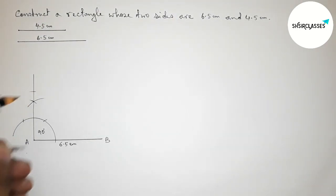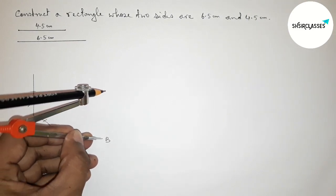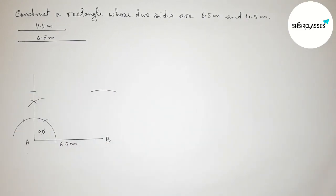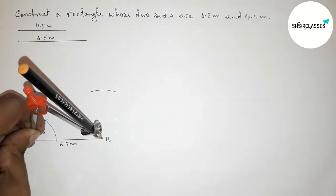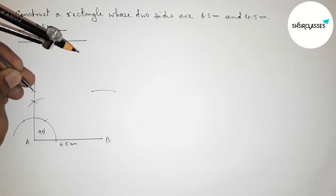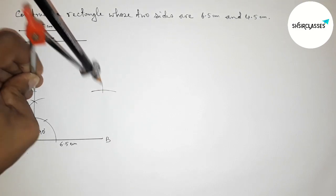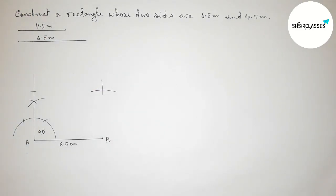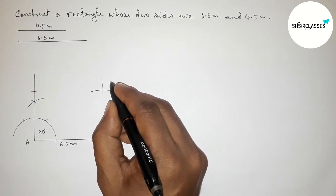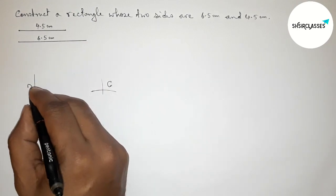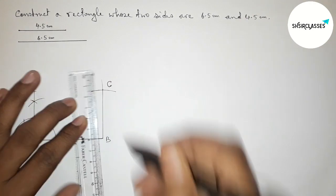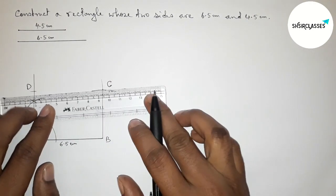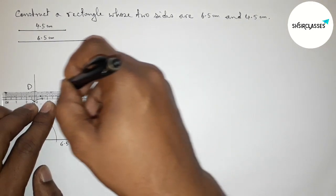Taking the 4.5 centimeter length, putting the compass on point A and marking point D. Putting the compass on point B and drawing an arc. Then taking the length 6.5 centimeters, equal to AB, placing the compass and cutting to mark point C.